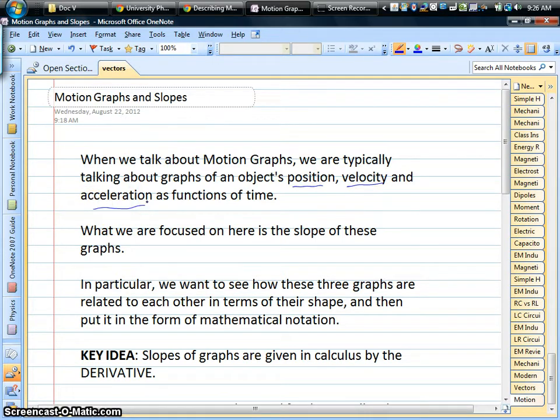Those are the big three values that we need to be able to describe the motion of pretty much anything, whether it's a car, a plane, a particle, or an atom flying around in a gas. In particular, we want to focus on the slopes of these graphs and make a connection between the three types of graphs and these three quantities that we have to describe motion.